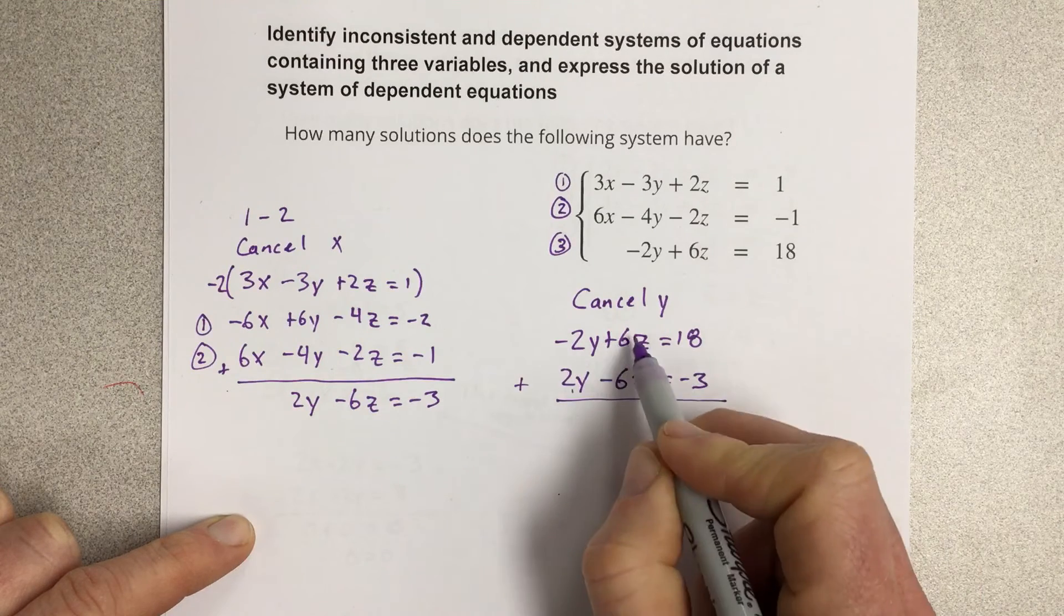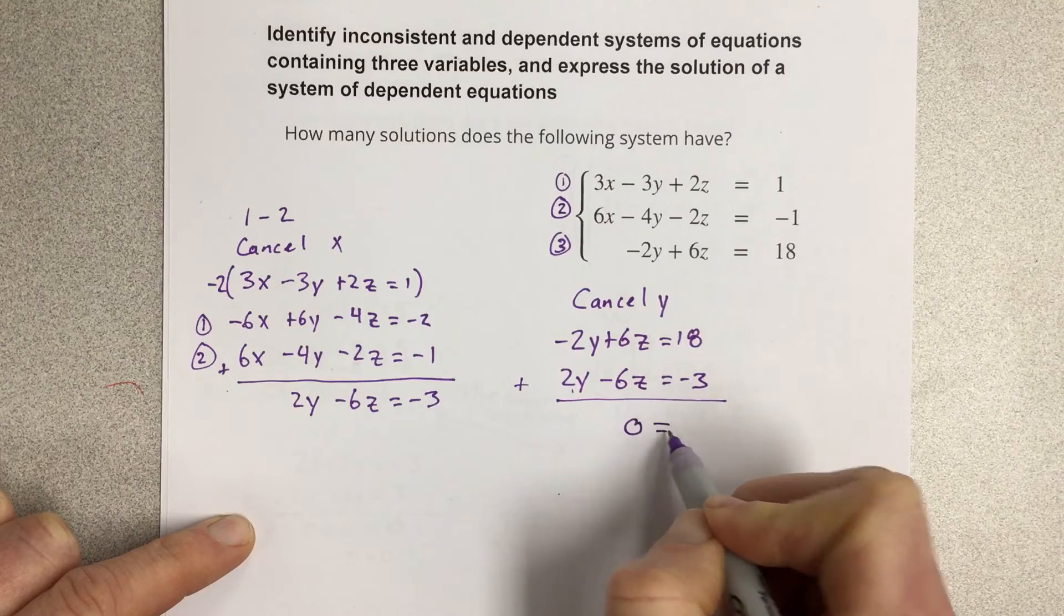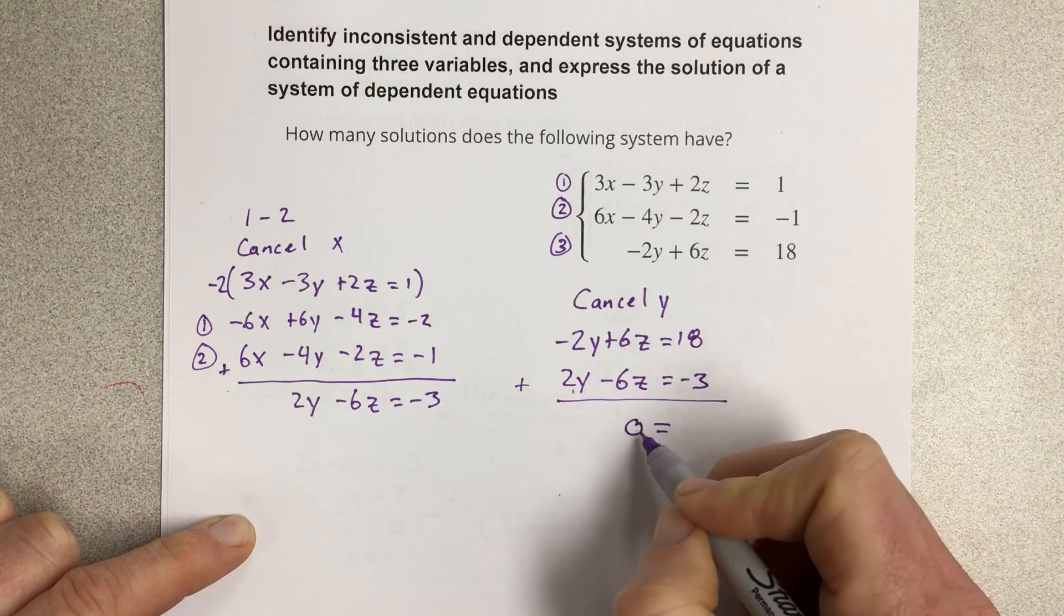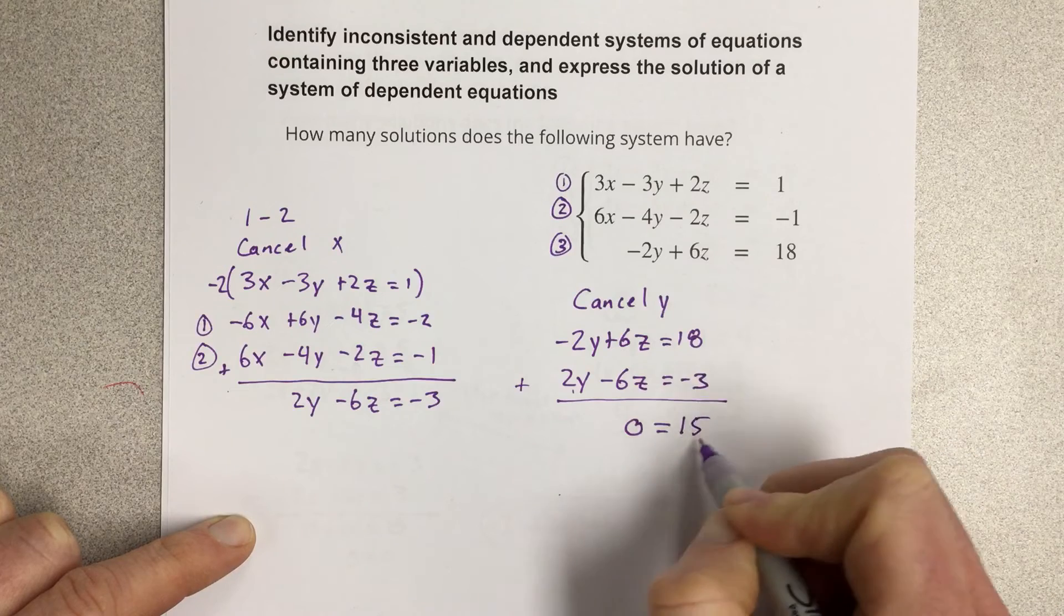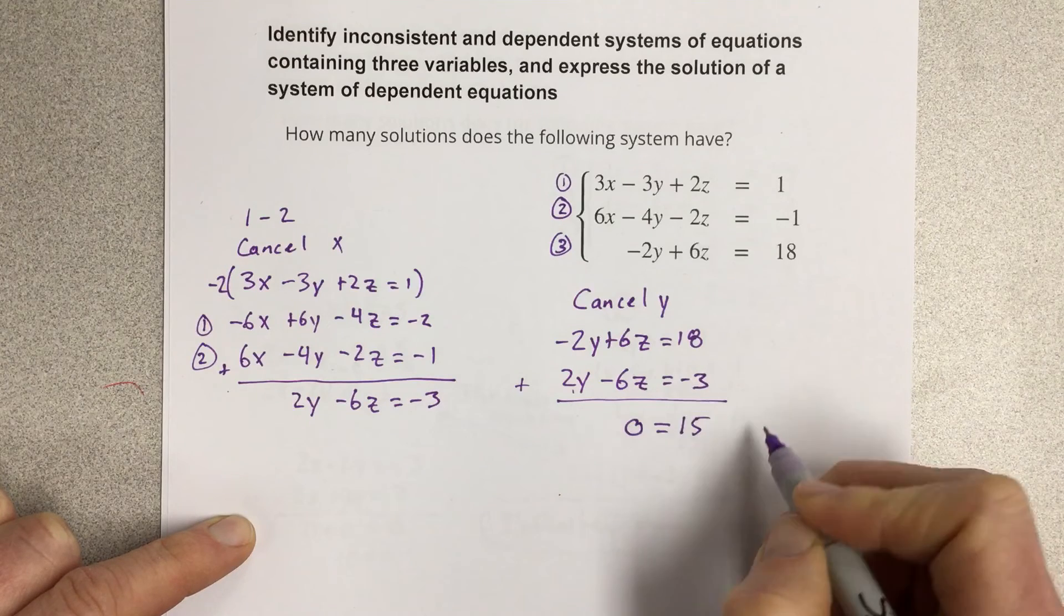When I add this together, that's zero, zero. Oh, all the variables canceled. So we got zero equals 15. Well, this doesn't make sense. This is false.